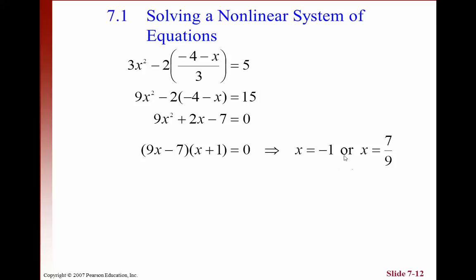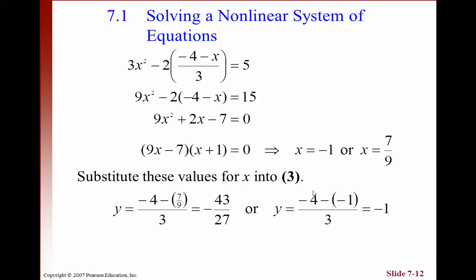So we're not going to go into solving the quadratic here. But you've got two values of x and y that work for that quadratic. Substitute those into the original equation, the second equation. And you get y equals that. So we solved that one for y when x was seven ninths, and we solved this one for y when x was negative one. We got y equals negative one. So the solution was (7/9, -43/27) and (-1, -1).